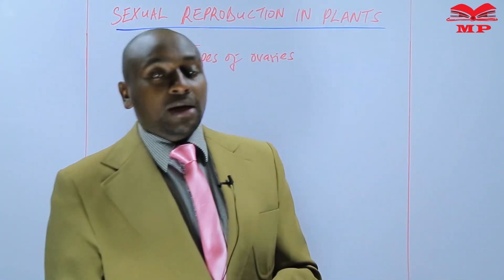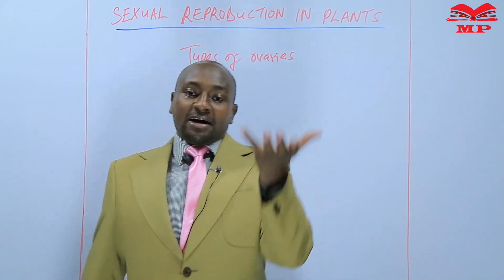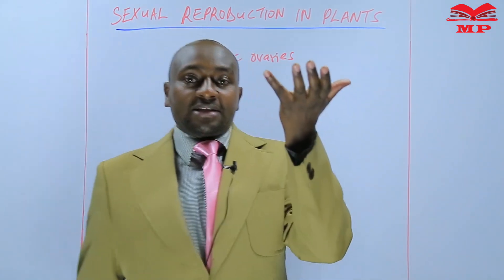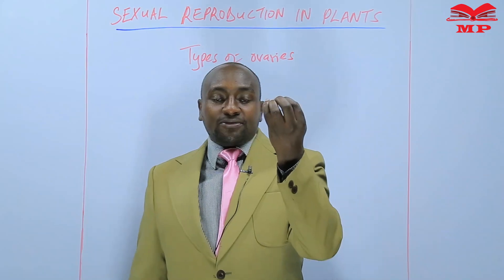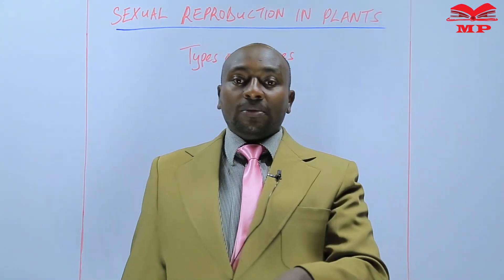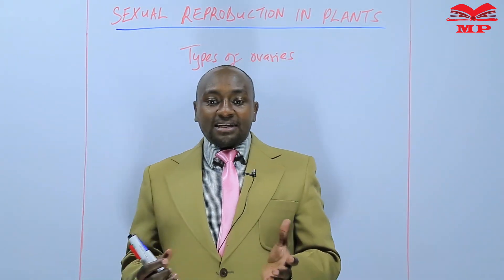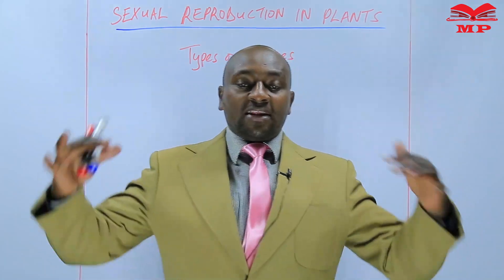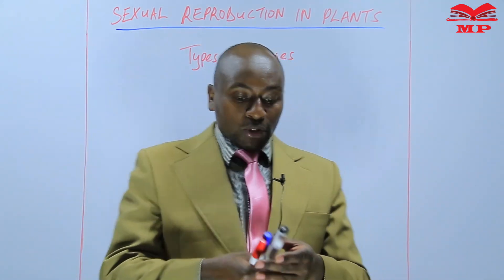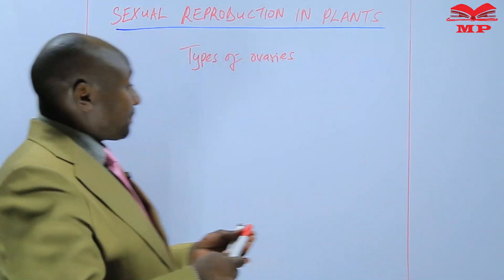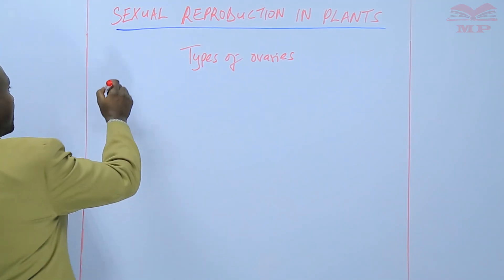For example, we have some ovaries that form above the receptacle, we have others that form deep in the receptacle, and we have others that form while they are surrounded by the receptacle. So basically, we are going to have three types of ovaries.